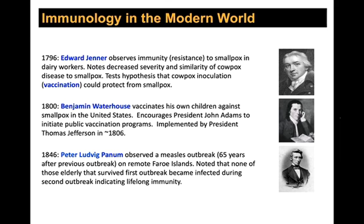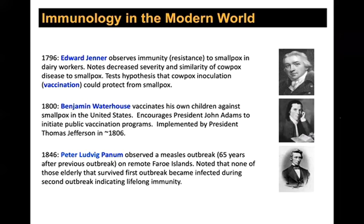Student question: Does variolation only refer to smallpox, or are there other examples? Variolation comes from the name for smallpox — variola major and variola minor — so variolation is inoculation with actual smallpox. Vaccination, from the Latin for cow (vaca), is the process of using cowpox to inoculate and protect from smallpox. They are slightly different.